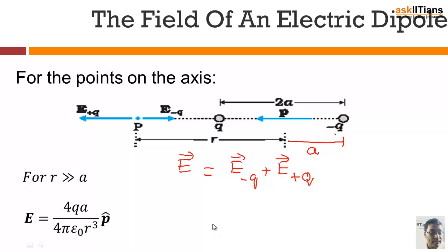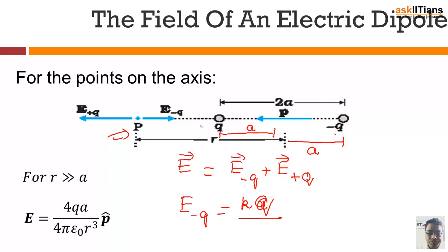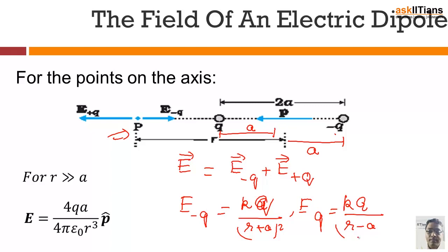The electric field due to the minus q charge at point B is given by kq divided by (r + a)², and the electric field due to plus q is kq divided by (r − a)². These two are added up to give the net electric field. After applying the approximation that r >> a, we obtain the simplified expression for the axial electric field.